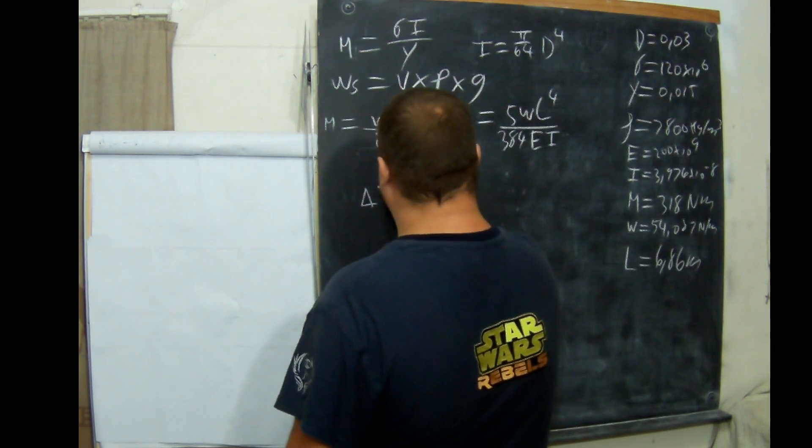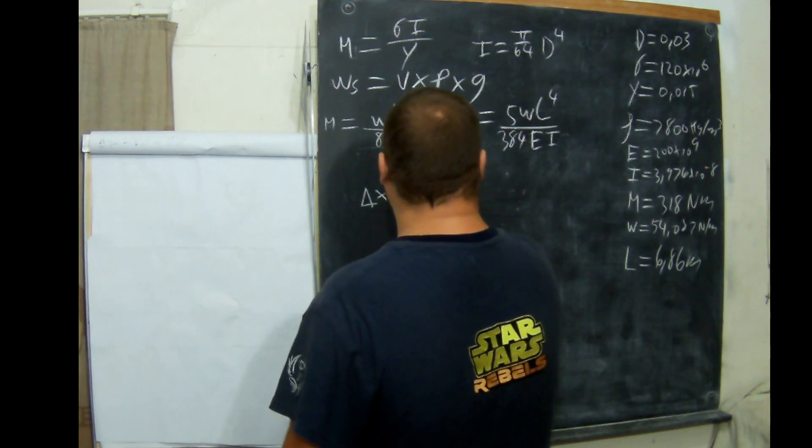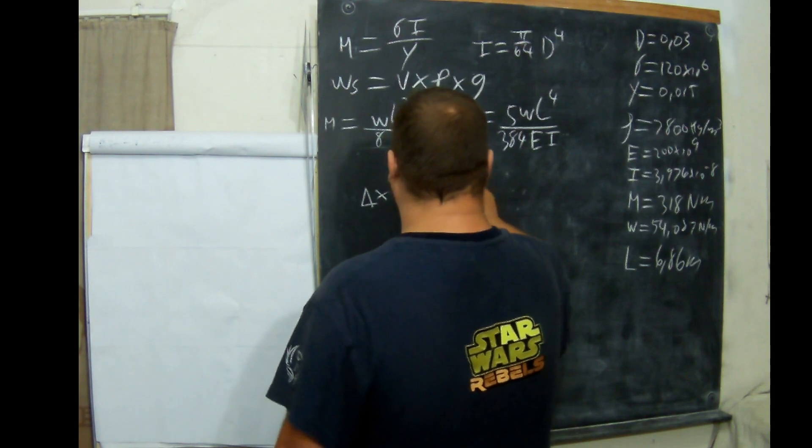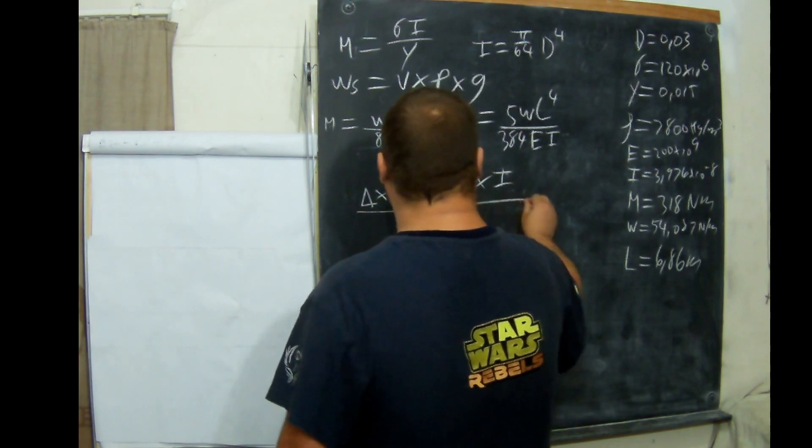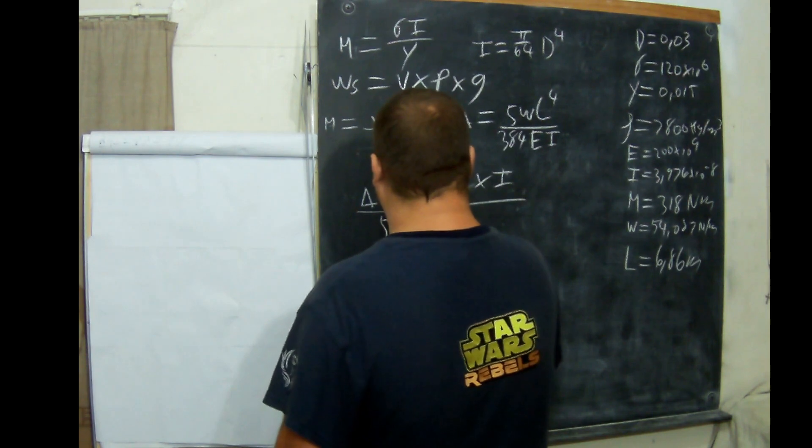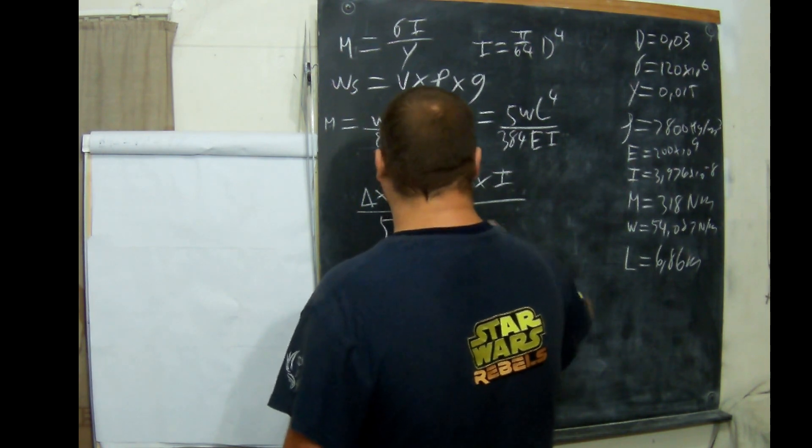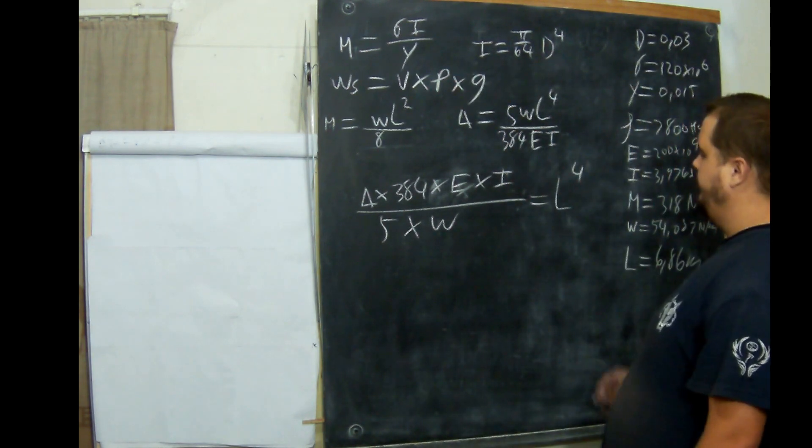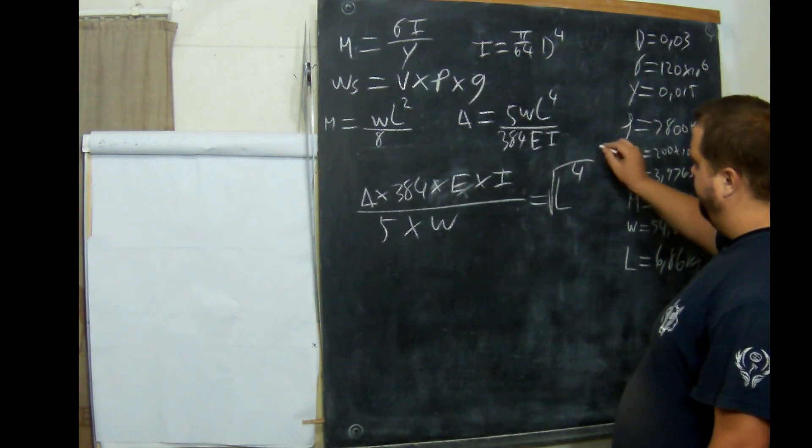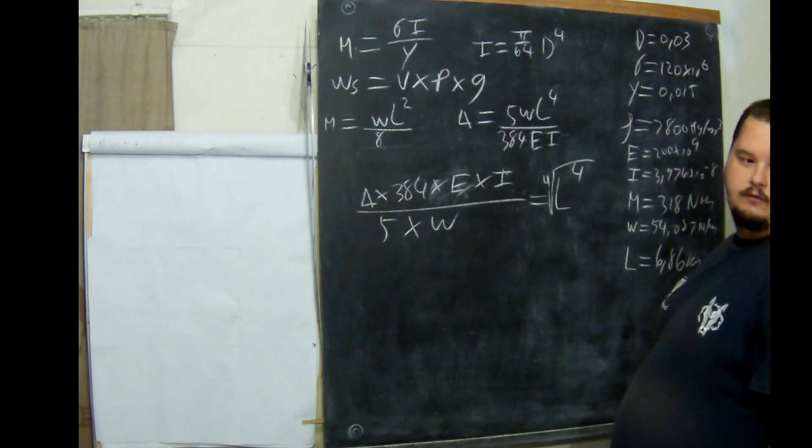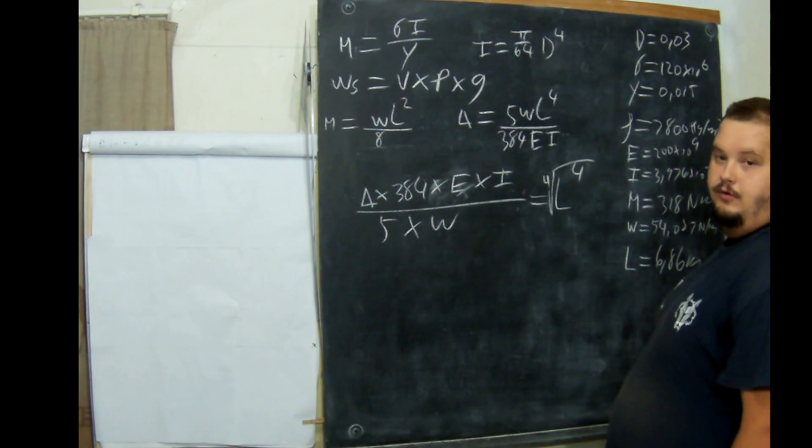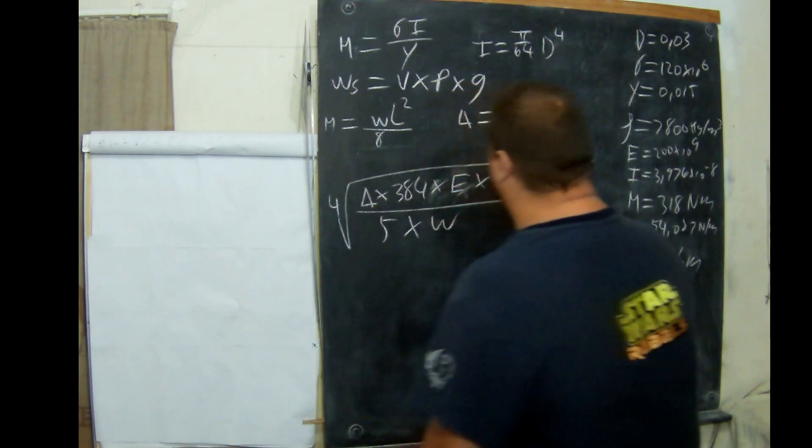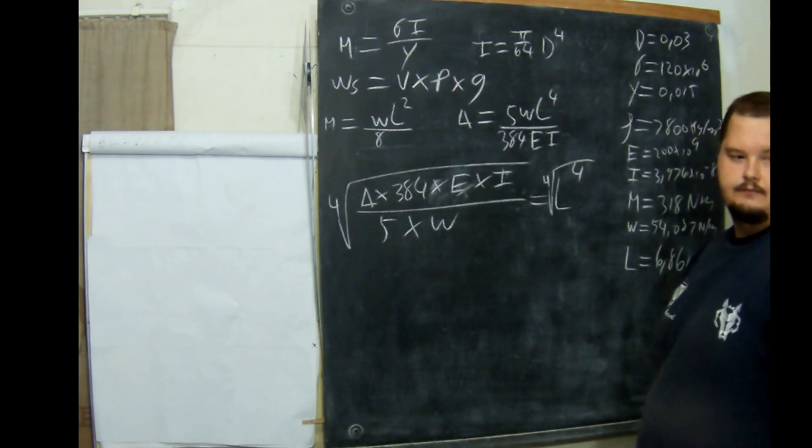So Y multiplied by 384 times E times I all over 5 times W equals L to the fourth power. Now when we get rid of the to the power of 4, it's root to the power of 4. It's the fourth root to get L.